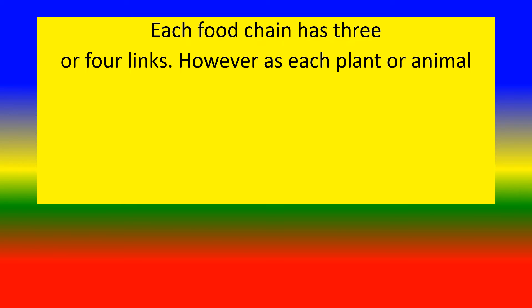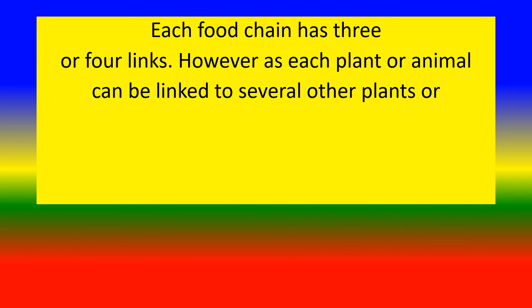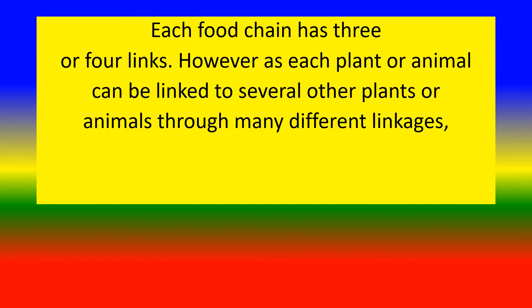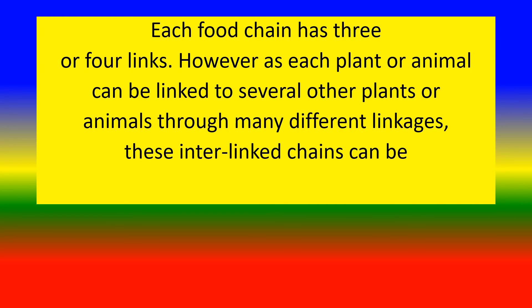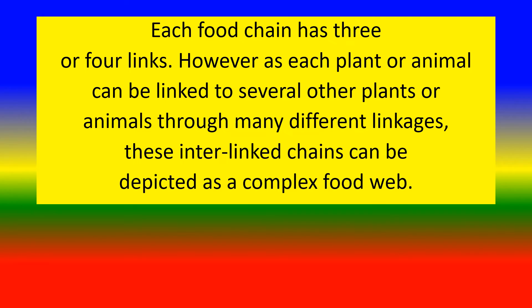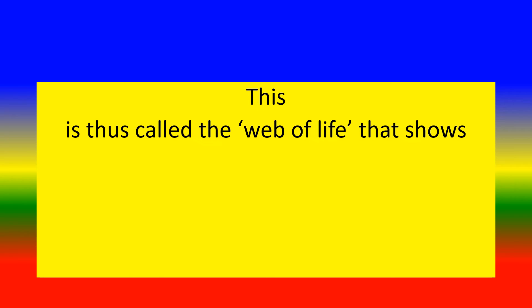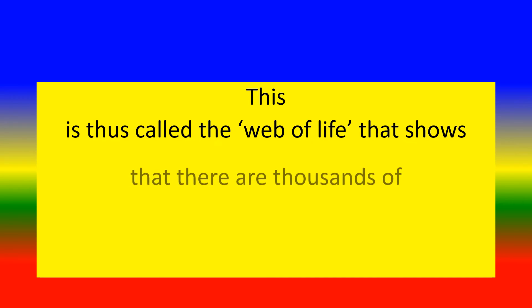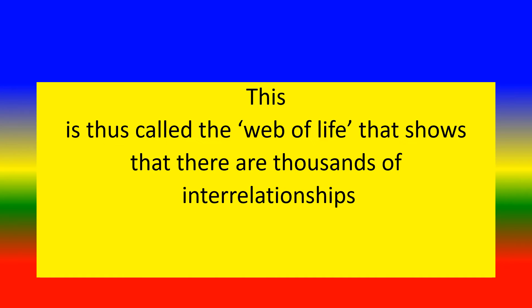Each food chain has three or four links. However, as each plant or animal can be linked to several other plants or animals through many different linkages, these interlinked chains can be depicted as a complex food web, called the Web of Life, which shows that there are thousands of inter-relationships in nature.